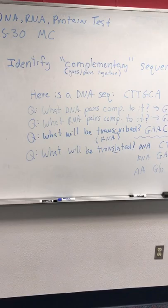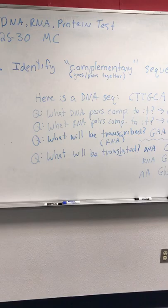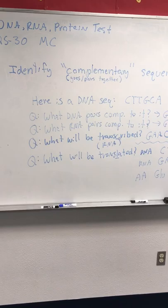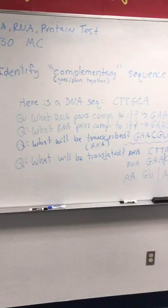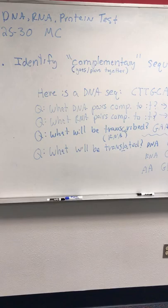The second question could ask what RNA pairs complementarily to the DNA sequence. Instead of using DNA nucleotides, you use RNA nucleotides — so remember, instead of T it's U. The RNA complement would be G-A-A-C-G-U.